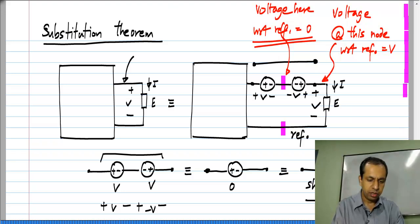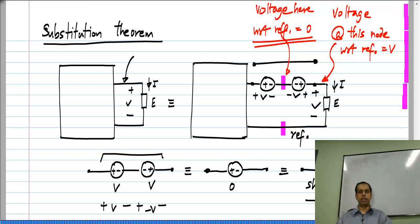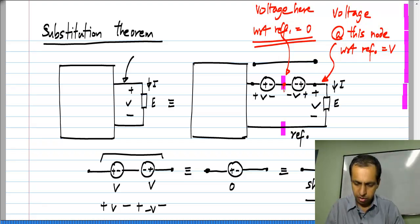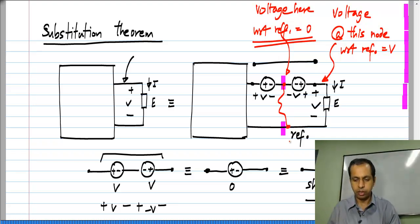What does this mean? If I have two nodes in the circuit with exactly the same voltage, I can connect the two together without altering anything else in the circuit. So I can connect those two together.